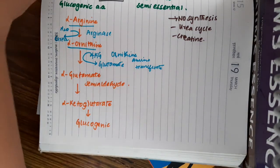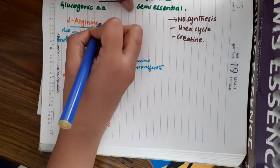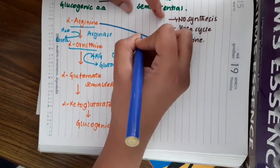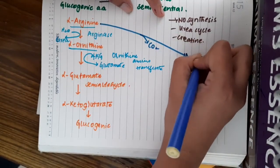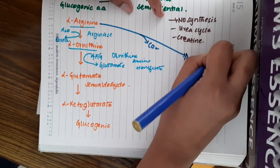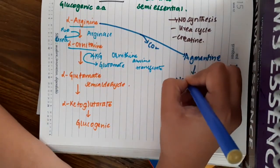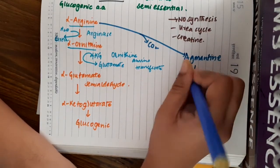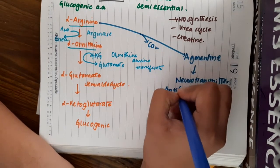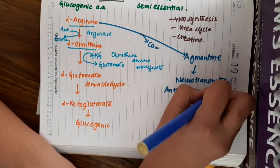Now, there is one more pathway. This arginine undergoes decarboxylation and it forms agmatine. What is this agmatine? This agmatine is used as a neurotransmitter and it has anti-hypertensive property.